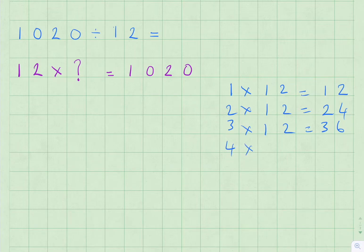4 times 12 equals 48, 5 times 12 equals 60, 6 times 12 equals 72, 7 times 12 equals 84.